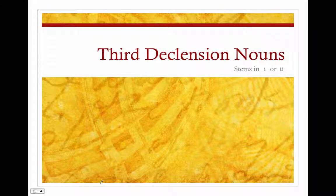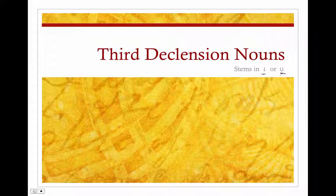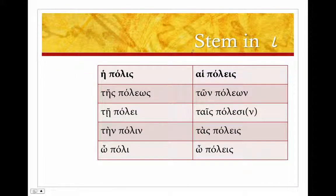Here's another lesson on a type of third declension noun and how to decline those nouns whose stems are in iota or upsilon. These are special nouns because there is a shift in the stem — where it looks like an iota or upsilon in the nominative, it's actually going to in most cases shift to an epsilon. You'll be able to note that when you look at the genitive singular.